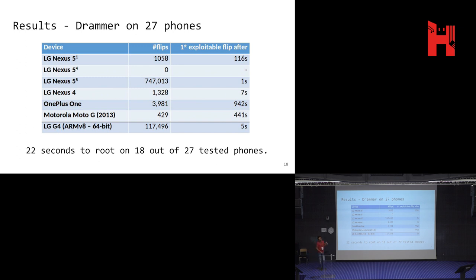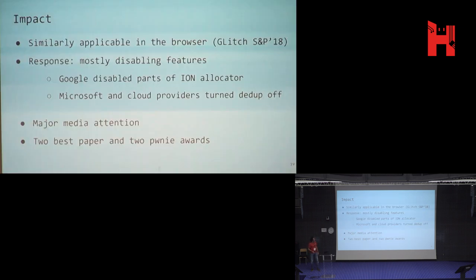We did more research and showed you could also do this in the browser using JavaScript — if you see an ad doing this attack, you could potentially compromise the browser using the same type of attack. This was a paper published at IEEE Security and Privacy in 2018. Every time we find these issues, we go and talk with the vendors and try to get them to fix these things, because our aim is not to build exploits — we want to improve the state of the world.